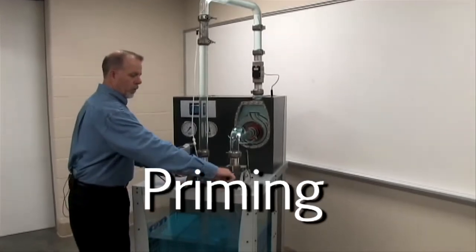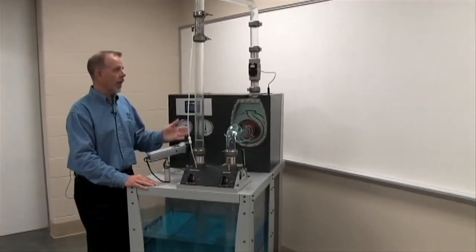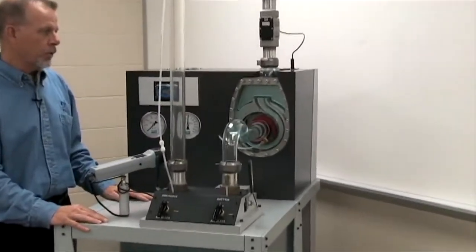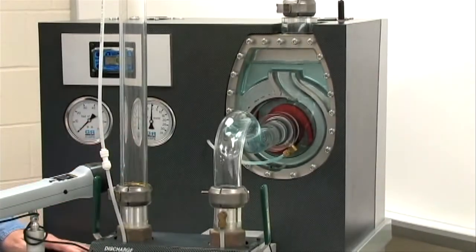We'll open both air valves, inducing air back into the system, allowing the liquid to fall back to the amount of water that we normally place inside the pump for priming.